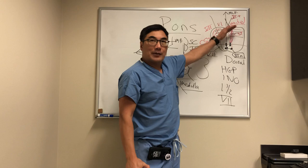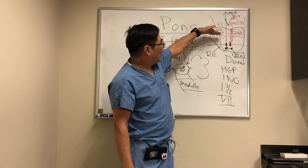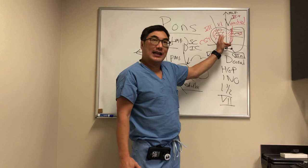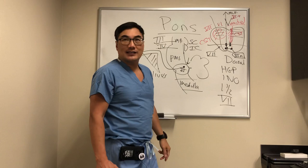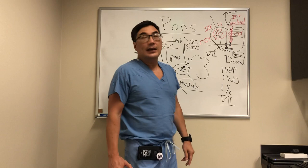Adding in that seventh nerve laterally gives you a six, a seven, and a hemiparesis — this we call Millard-Gubler. If we just have the medial lesion and miss the seven, with a similar hemiparesis and a contralateral sixth nerve palsy on one side and contralateral hemiparesis on the other — that we call Raymond.